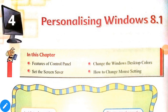Good afternoon dear students. Today I'm going to start Chapter 4 of your computer. The name of the chapter is 'Personalizing Windows 8.1.' In this chapter we will know about features of the Control Panel, how to change the Windows desktop colors, how to set the screen saver, and lastly how to change mouse settings.